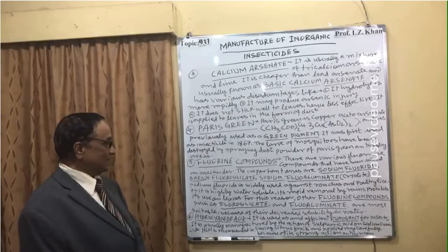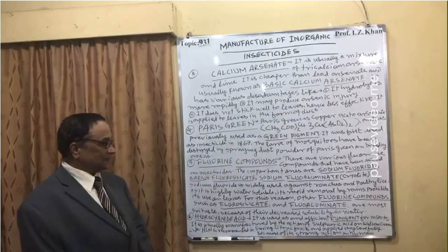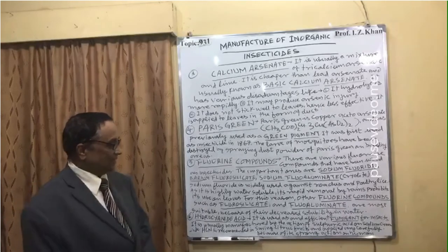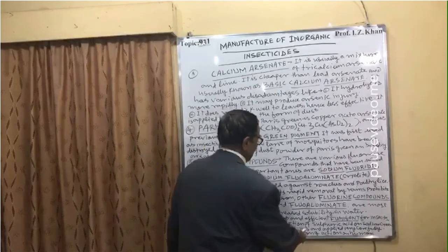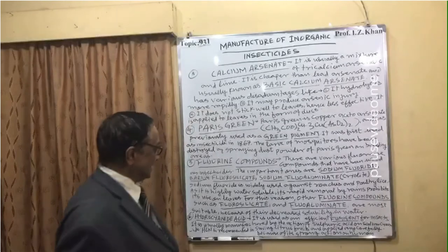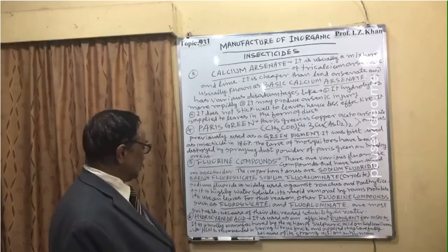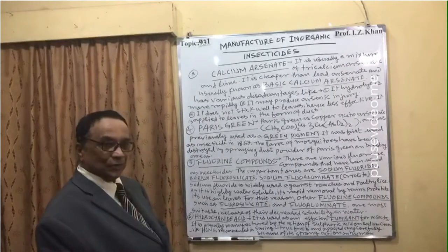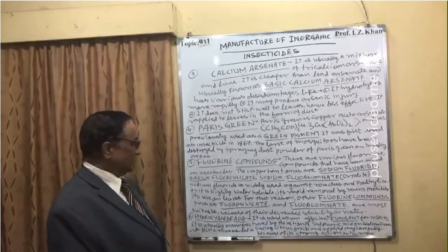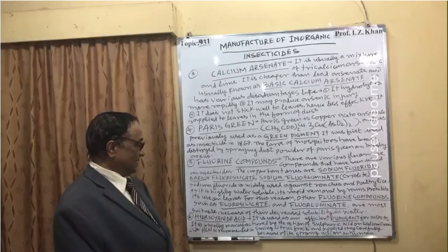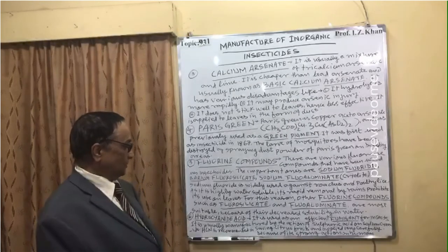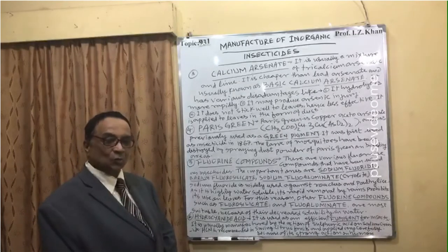Number six: hydrocyanic acid. It is used as an efficient fumigant for insects. It is usually manufactured by the action of sulfuric acid on sodium cyanide. HCN is recommended in saving citrus fruits and must be applied very carefully because of its strong toxic action on the human system.